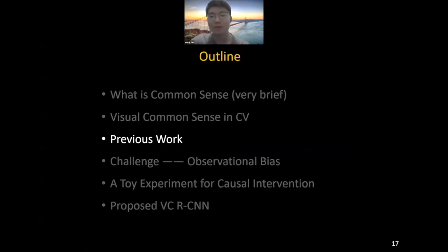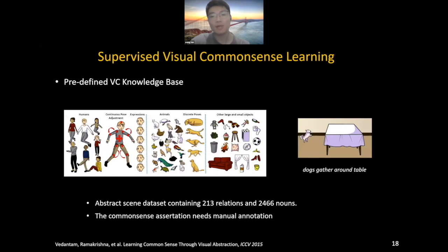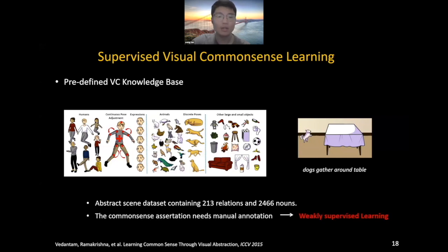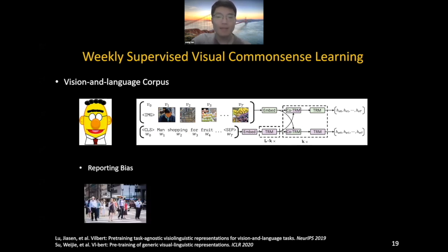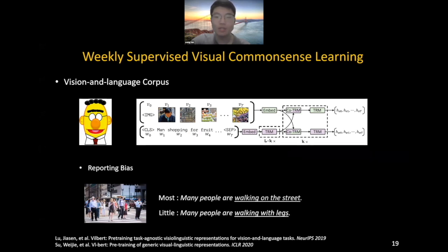Many previous researchers have tried to encode visual common sense. The most direct way is supervised learning with a predefined visual common sense knowledge base. For example, VITM constructed a human-generated abstract scene dataset containing 230 relations annotated by AMT. However, these common sense relations need very expensive manual annotation. To solve this, weakly supervised learning was proposed. Some previous work performed weakly supervised learning from large-scale vision and language corpora. However, common sense is not always recorded in text due to reporting bias. For example, most may say 'people walking on the street', but few will point out 'people walking with legs'.